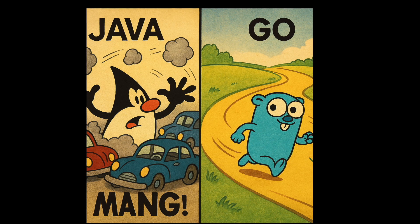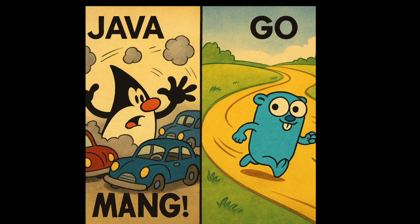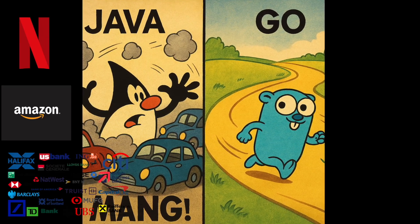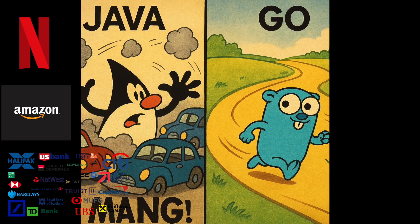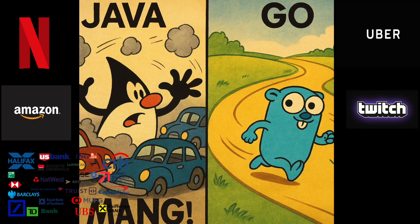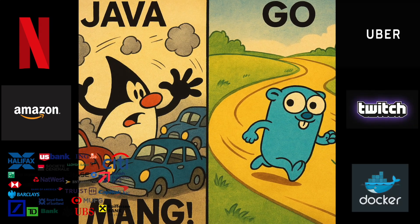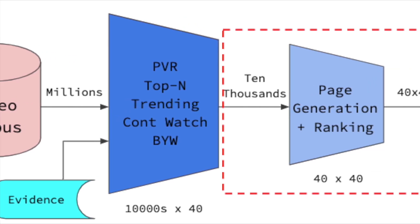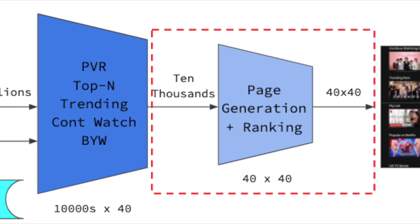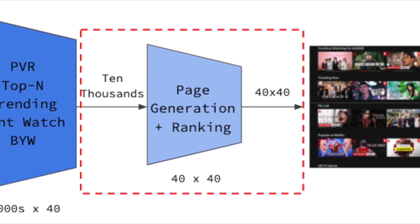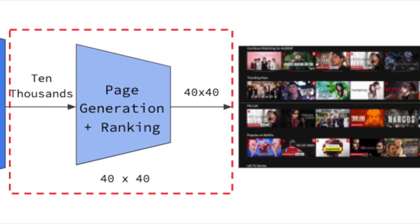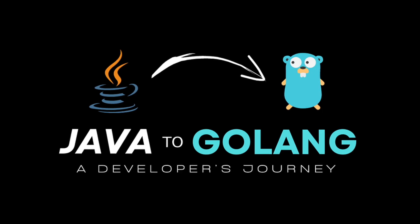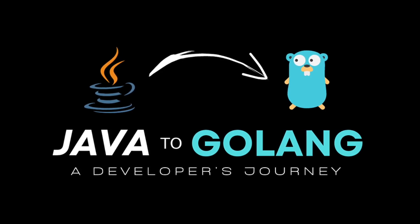In the real world, both have their champions. Netflix, Amazon, and most financial institutions run on Java, while Uber, Twitch, and Docker are powered by Go. Netflix uses Java to recommend shows, while Twitch uses Go to show you people watching other people play games.